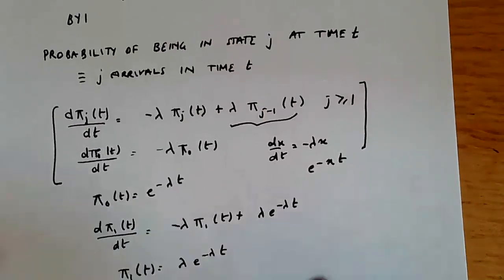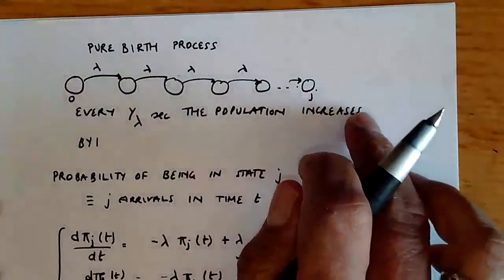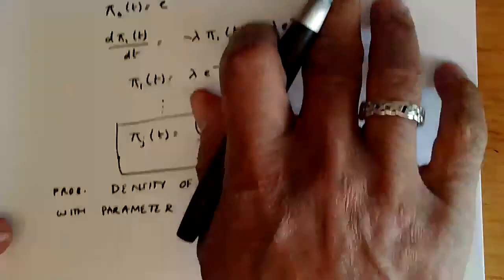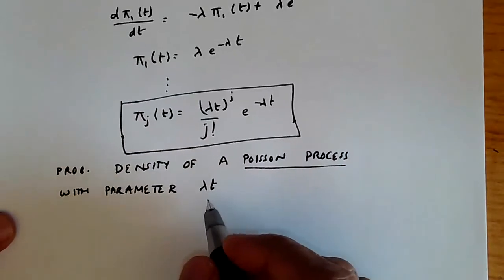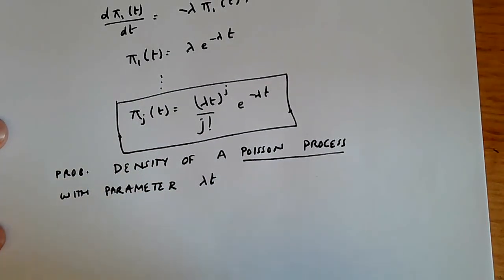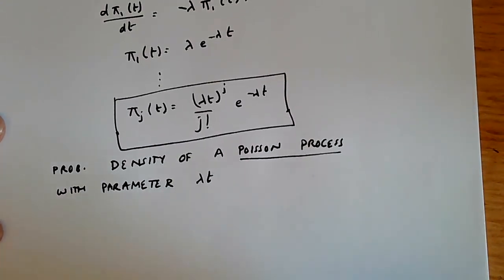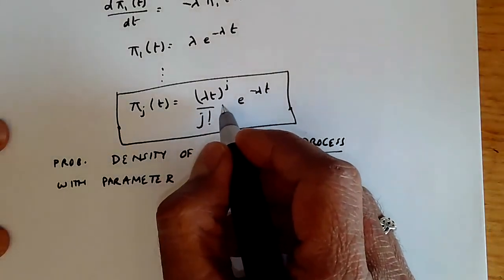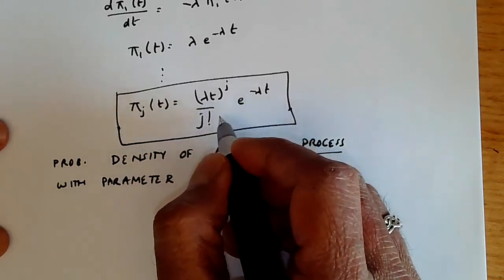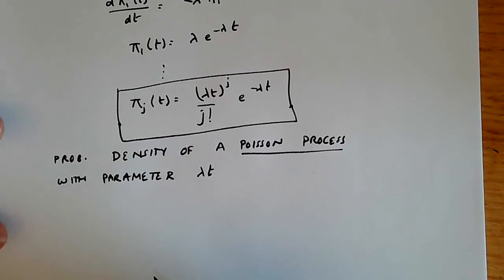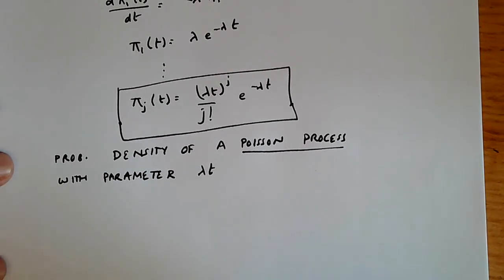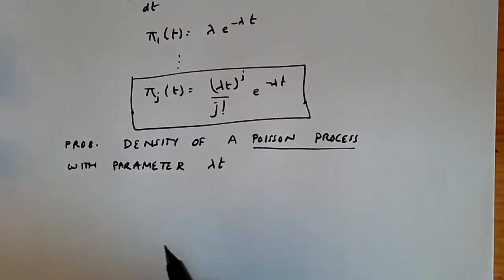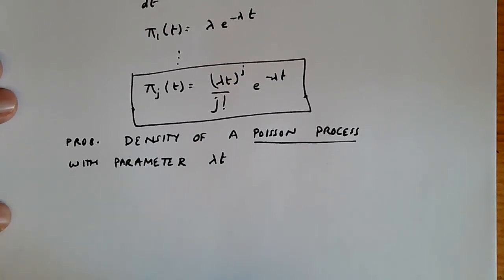In other words, a pure birth process which has only arrivals at rate λ, where the arrival rate is independent of the state, is exactly the same as a Poisson process with parameter λt. So the pure birth process is an alternative way of looking at the Poisson process. The Poisson distribution can be viewed as characterizing the behavior of such a process, and this equation giving the probability of j arrivals in time t is the simplest possible model for arrivals to any queue. If you don't know very much about a queue, a standard assumption is that arrivals come from a Poisson process — not necessarily the best assumption, but reasonable as a first shot and it certainly makes the analysis much easier.